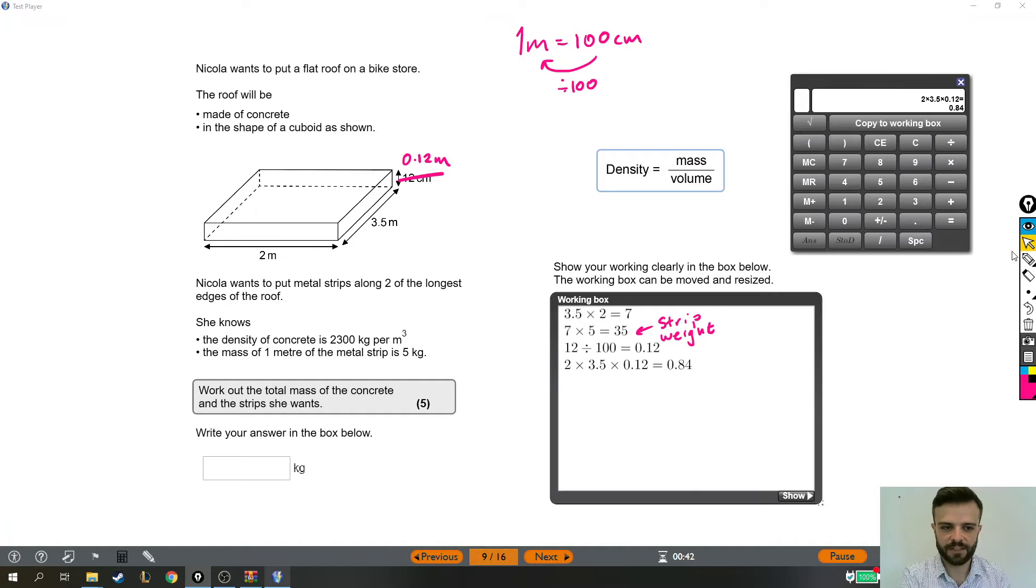But that hasn't helped us yet work out how heavy it is. Let me just make a note. Volume of cuboid. But that hasn't yet helped us work out the mass of the concrete. What we know is that the density of the concrete, which is written over here, density of the concrete is 2300 kilograms per meter cubed. And this formula tells us that density is mass divided by volume.